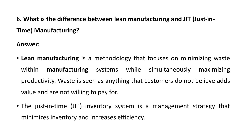Next question: what is the difference between lean manufacturing and JIT, that is Just-In-Time? Lean manufacturing works on defect reduction, whereas Just-In-Time is a management strategy that works on inventory. Lean manufacturing is a methodology focused on minimizing waste within the manufacturing system while simultaneously maximizing productivity. Waste is anything that customers do not believe adds value and are not willing to pay for — any process or activity that does not add value to your product.